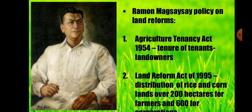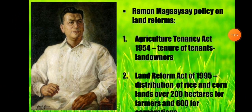Under Ramon Magsaysay, first was the Agricultural Tenancy Act of 1954, regarding the tenure of tenant landowners. Second was the Land Reform Act of 1955, which involved distribution of rice and corn lands over 200 hectares for farmers. The distribution of 200 hectares of rice and corn lands for farmers was a positive step.